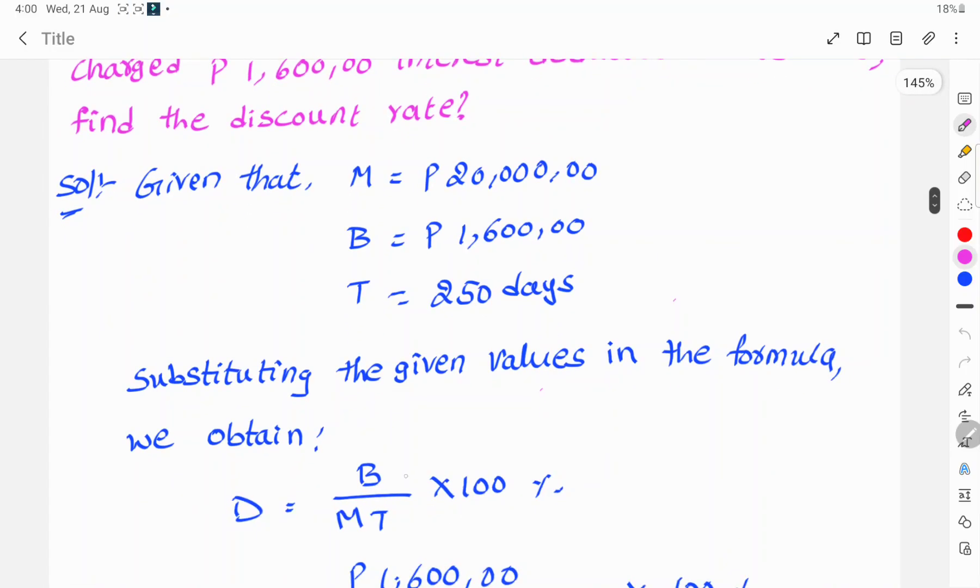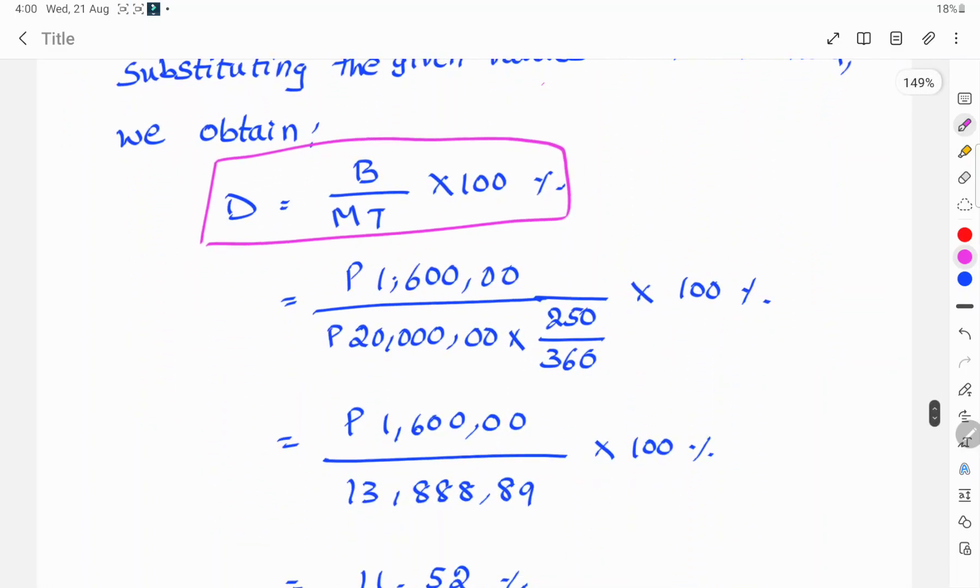Substituting the values in the formula, we obtain D equals B by MT into 100%. This is the formula.